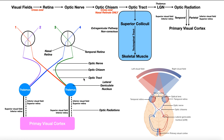After the optic chiasm, we now have optic tracts that project to the thalamus. The right optic tract is composed of the green and red fibers, corresponding to visual fields one and three — which, regardless of which eye, represent the left visual field. So once we get past the chiasm, it's more helpful to think left versus right rather than temporal or nasal. The left visual field in both eyes corresponds to the right half of the retina in either eye. The left optic tract is purple and blue, representing the right visual field in both eyes, corresponding to the left retina in either eye.